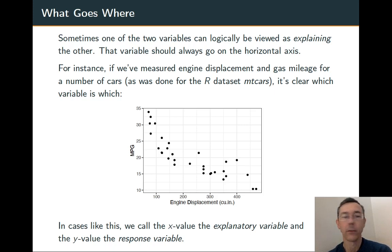Last thing we should say about scatter plots. It's important to think a little bit about which variable you're putting on the horizontal axis and which one goes on the vertical. If you have two variables where one can naturally be viewed as explaining the other for the purposes of some study, then that should go on the horizontal axis.